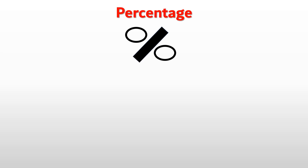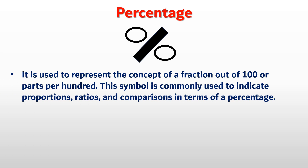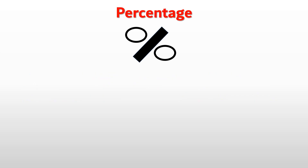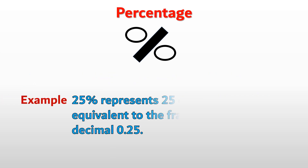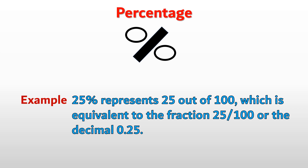Next, Percentage. It is used to represent the concept of a fraction out of 100, or parts per 100. This symbol is commonly used to indicate proportions, ratios, and comparisons in terms of a percentage. Example: 25% represents 25 out of 100, which is equivalent to the fraction 25/100 or the decimal 0.25.